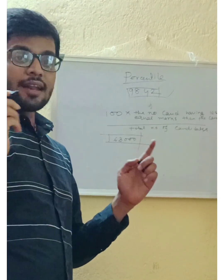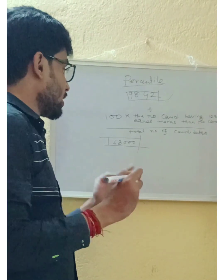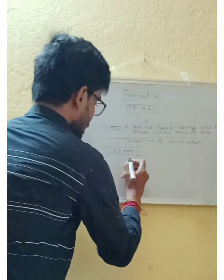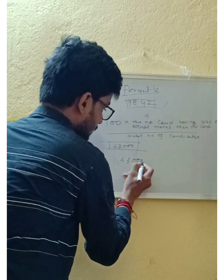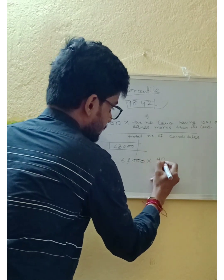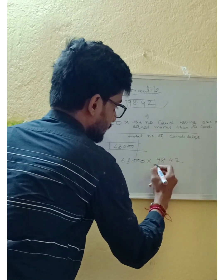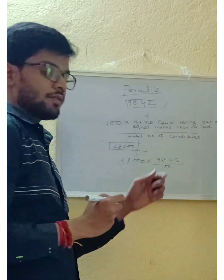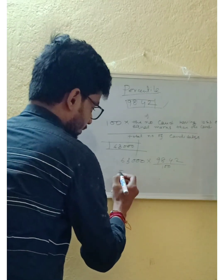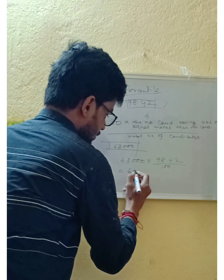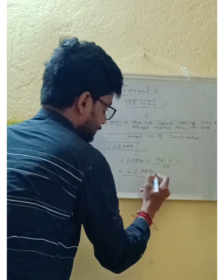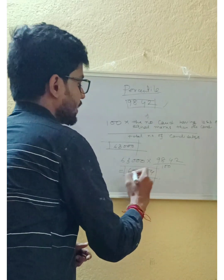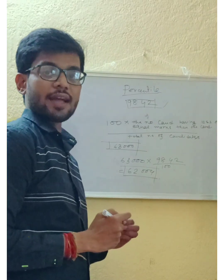Suppose 98.42 is your percentile and the total number of students who appeared in the examination is 63,000. Then the number of students who scored less than or equal to you is 63,000 multiplied by 98.42 divided by 100, which comes out to around 62,004. That means you scored more than or equal to 62,004 candidates.